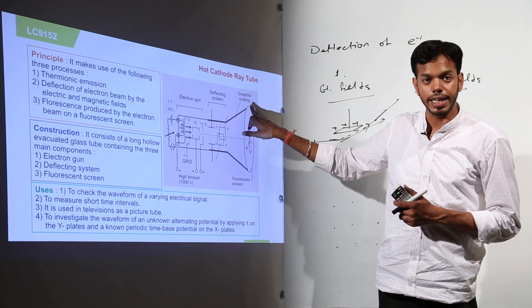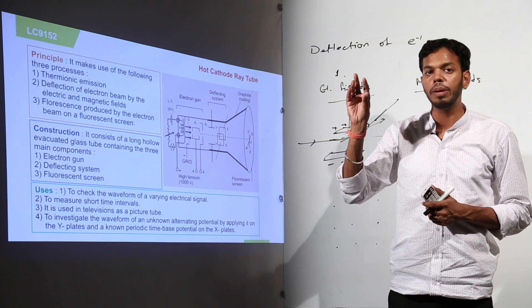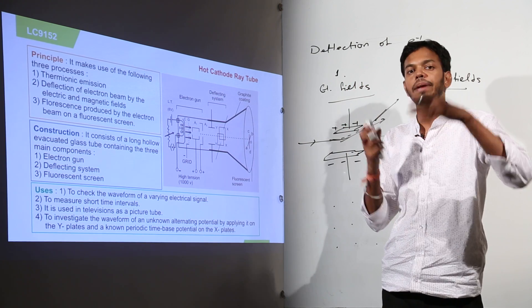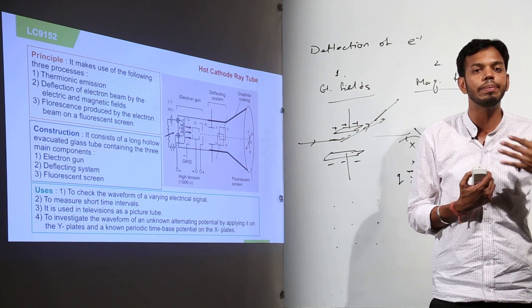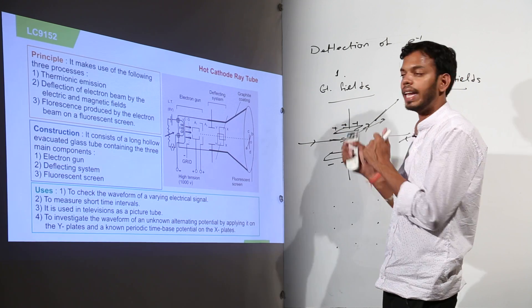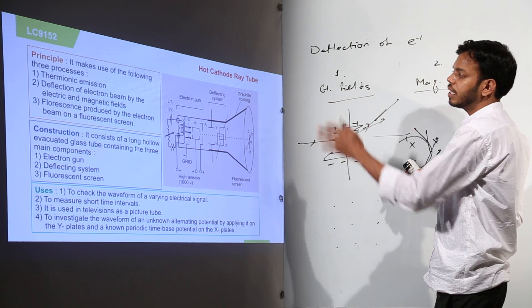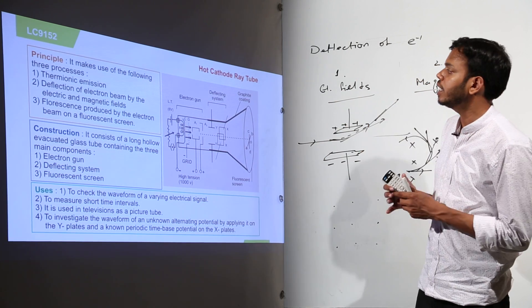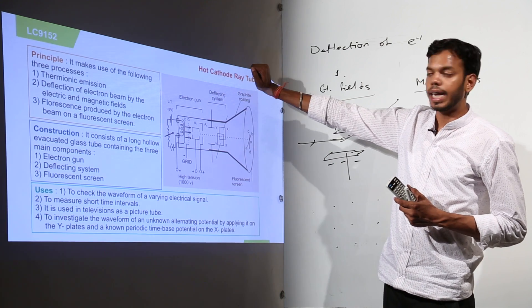Because we are going to change the direction of electrons using these two phenomena. So wherever electron is striking, we are going to see the glowing pattern and then we can make the patterns. We can make the readings according to wherever electrons are following. So these three principles were combined together to produce CRT.